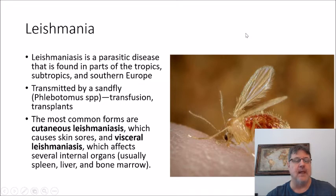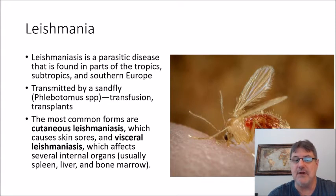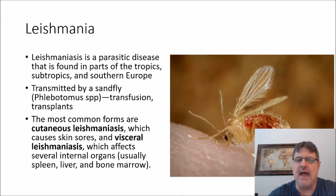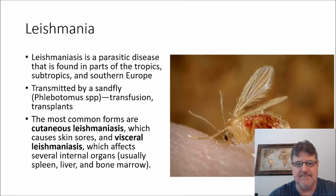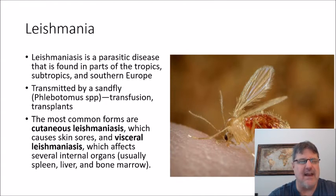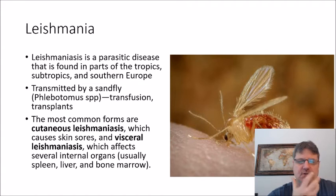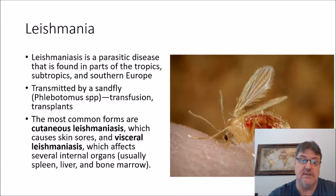Now let's close out the blood and tissue flagellates with Leishmania. This is a parasitic disease found in parts of the tropics, subtropics, and southern Europe, transmitted by the sandfly from the Phlebotomus species. More rarely, it can be transmitted via transfusion and transplants. The most common forms are cutaneous leishmaniasis, which causes skin sores, and mucocutaneous infection, which can cause very destructive changes to the face or ears. Visceral leishmaniasis is the more serious type, affecting the spleen, liver, and bone marrow.